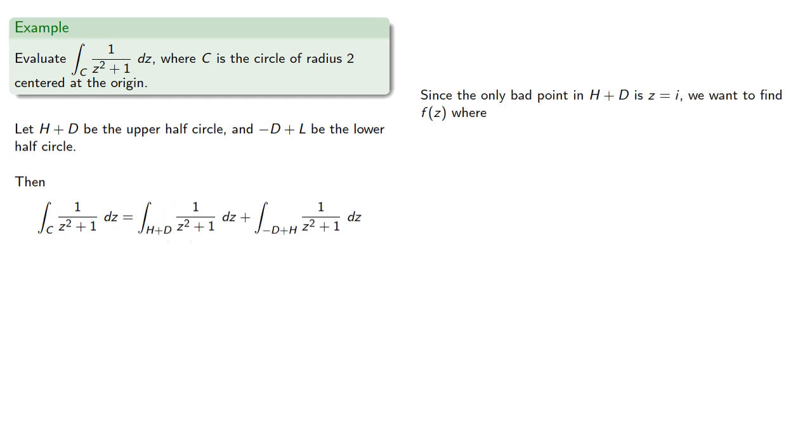Since the only bad point in H plus D is z equal to i, we want to find f(z) where our integrand is f(z) over z minus i.